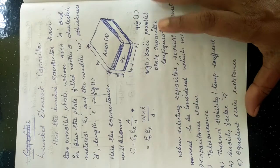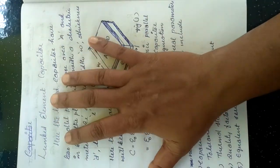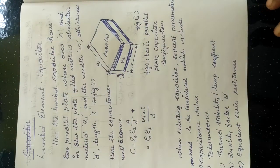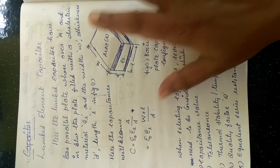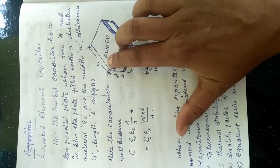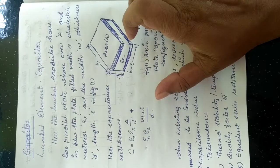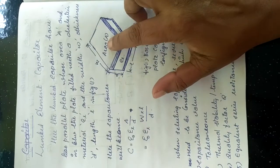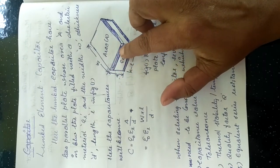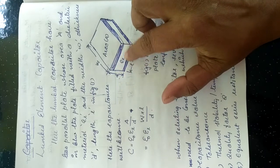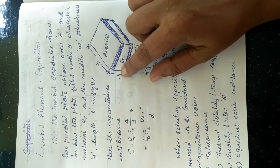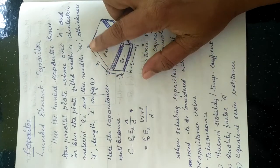Today we are going to discuss about the lambda element capacitors. This lambda element capacitor has two parallel plates having area A. In between these two parallel plates there is a separation with dielectric material having permittivity epsilon-r, length L, and the distance between the two parallel plates is D.